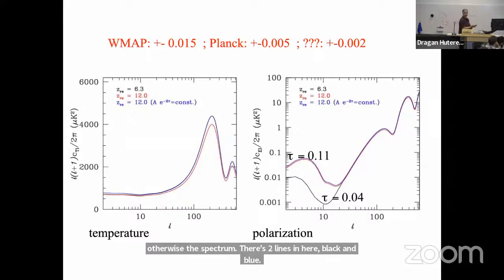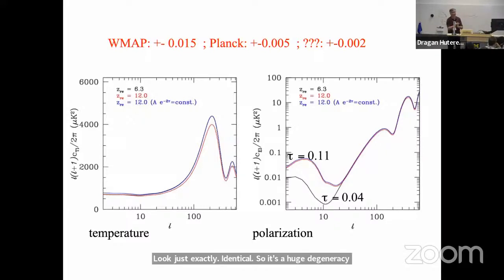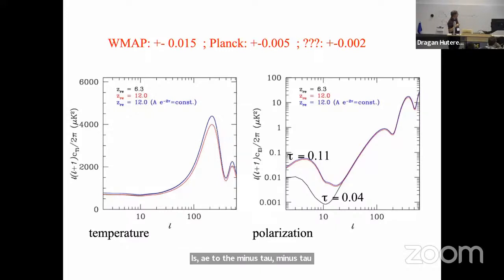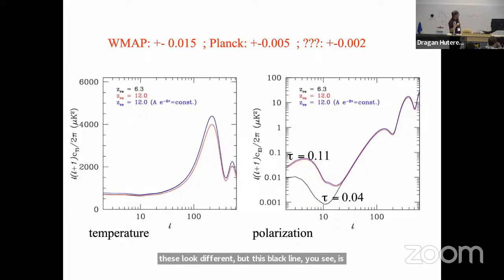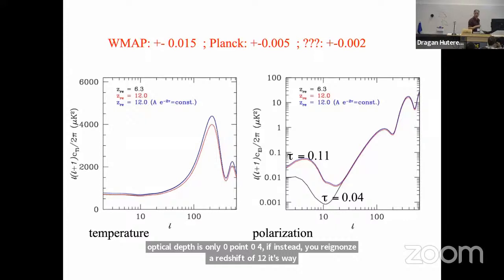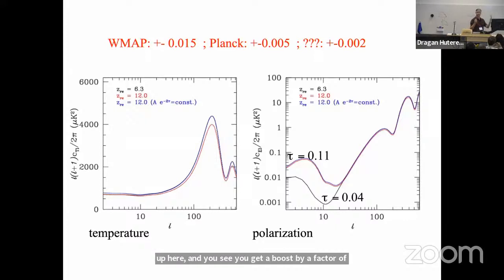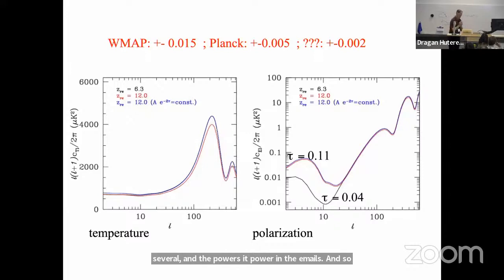So there's a huge degeneracy in the CMB: A_s e^{-2τ}. In polarization, though, notice what's happened. You knock a few things out of the beam, so these look different. If you reionize at 6.3, your optical depth is only 0.04. If instead you reionize at redshift 12, you get a boost by a factor of several in the power in the E modes. And this is how we measure τ using the CMB.